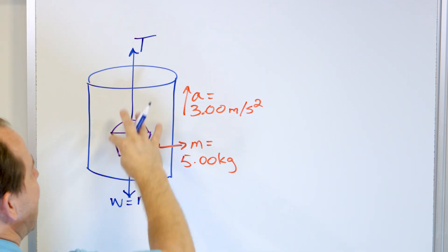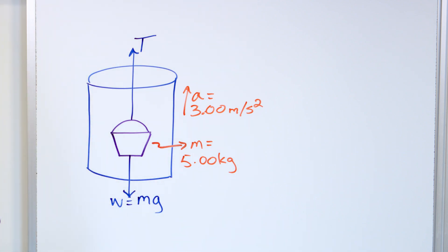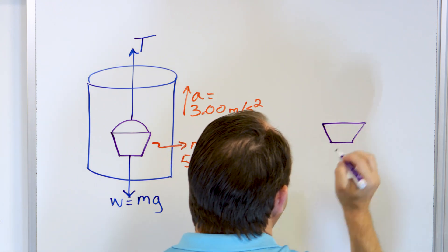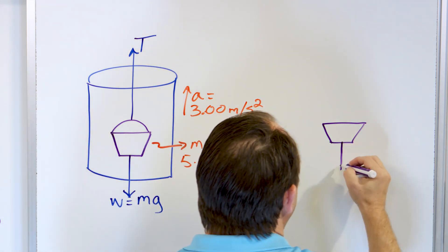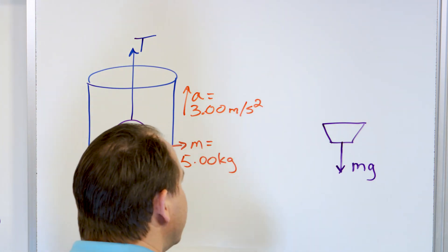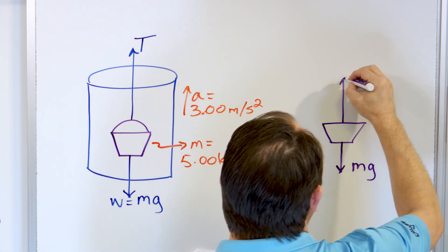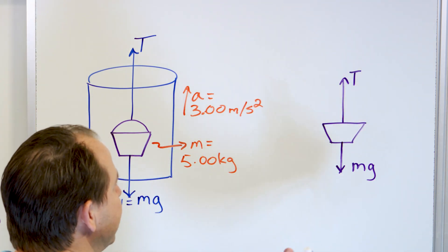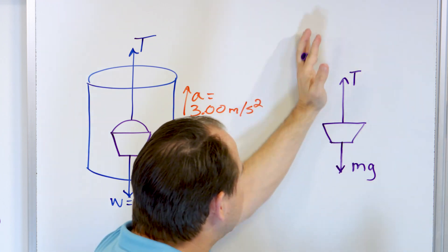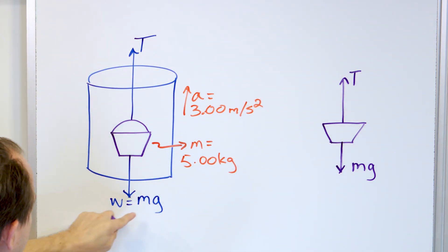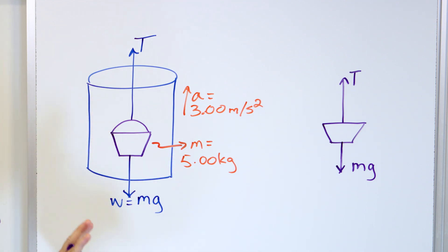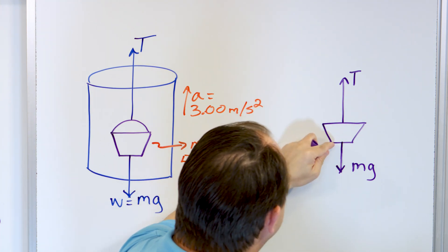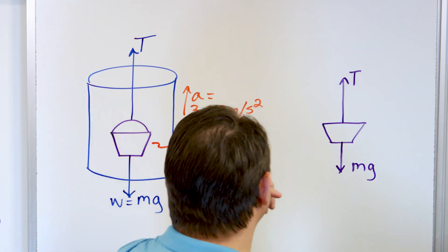To simplify, a free body diagram just shows the bucket with a downward force — mass times gravity, the weight — and an upward force, the tension T. You dispense with the well, the water, anything else. You focus on the object, make it as simple as you can, and show only the forces acting on it: earth pulling down with the weight, and tension in the rope pulling up.